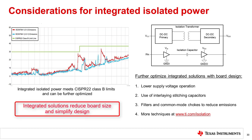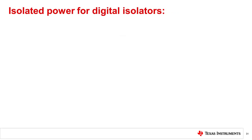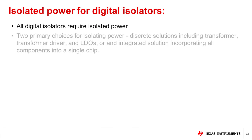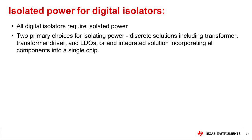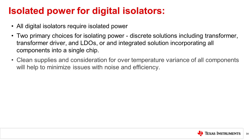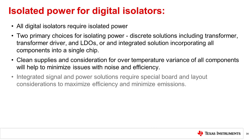Despite some of the challenges of integrated solutions, the benefit of eliminating the need for a transformer on the board and the reduction in board size and improved ease of certifications are considered worthwhile tradeoffs to achieve a high performance design in the smallest possible footprint. This completes our introduction to isolated signal and power supply design considerations. We discussed that all digital isolators require isolated power with separate supply lines and grounds for primary and secondary sides of the isolator. Connecting grounds or supplies would effectively short the isolation barrier. There are two primary choices for isolating power: discrete solutions including transformer, transformer driver, and LDOs; or integrated solutions incorporating all components into a single chip. Clean supplies and consideration for over-temperature variance of all components will help to minimize issues with noise and efficiency. Integrated signal and power solutions require special board and layout considerations to maximize efficiency and minimize emissions.